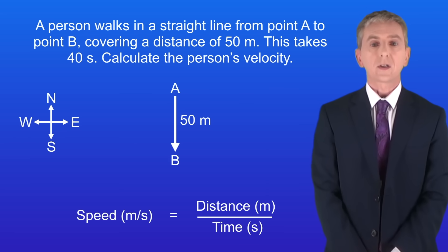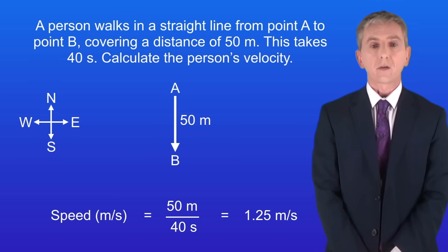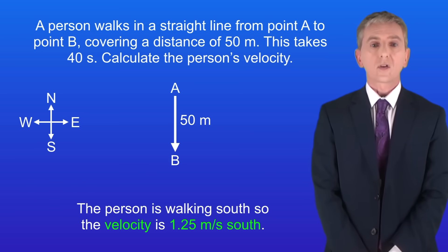Okay so we calculate velocity in the same way that we calculate speed. The speed equals the distance divided by the time. Dividing 50 metres by 40 seconds gives us a speed of 1.25 metres per second. As you can see the person's walking south so the velocity is 1.25 metres per second south.